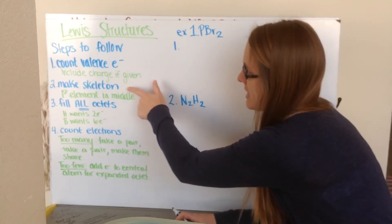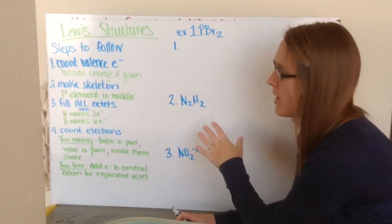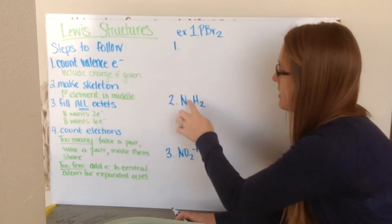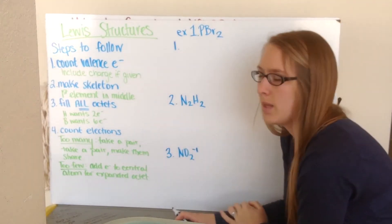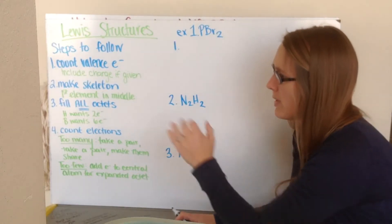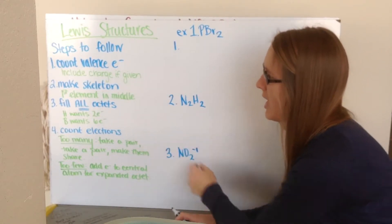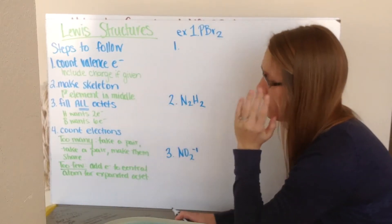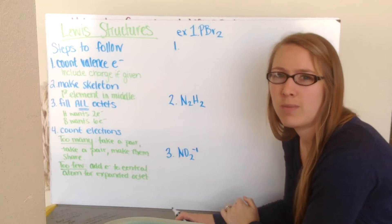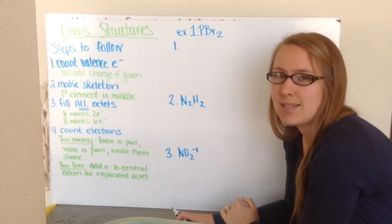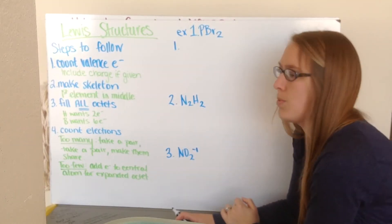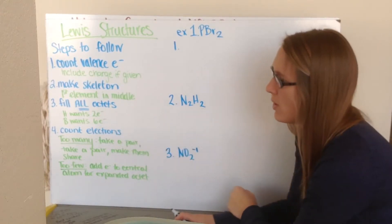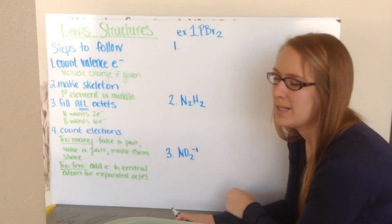After that, we go ahead and make the skeleton, which is where we're going to arrange our atoms in their relative location. The first element that's given to us is going to go in the middle. This is the protocol that we follow so that we can arrange them accordingly. After we make our skeleton, we're going to fill everybody's octets. We know that the octet rule states that every element wants to have 8 electrons. They want to be like the noble gases. There's two exceptions to that rule. One is hydrogen. He only wants 2 electrons. And boron only wants 6.